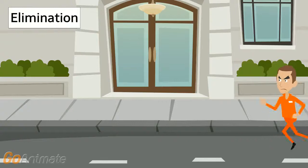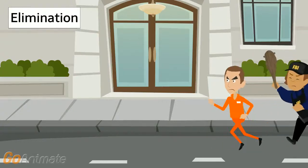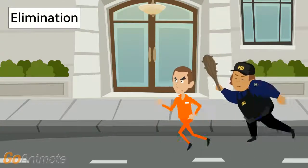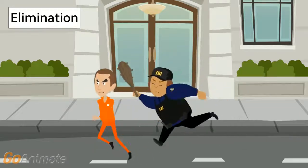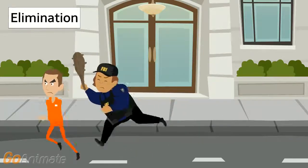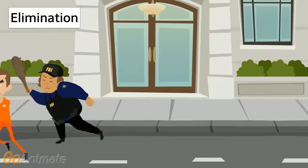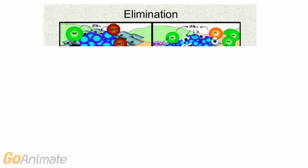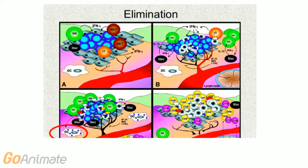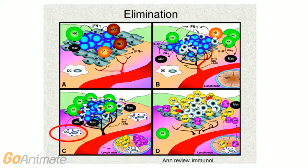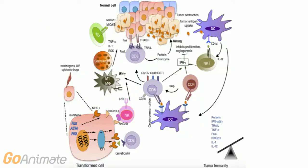Elimination is the first stage of immuno-editing and it occurs before there is clinical evidence of a tumour in a patient. To use our cops and robbers analogy, the robbers are trying to escape but are promptly stopped by the cops. Elimination requires the recruitment of interferon gamma, natural killer cells or NK cells, perforin, and TNF-related apoptosis inducing ligand or TRAIL, and type 1 interferon.